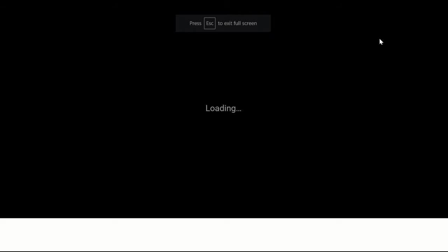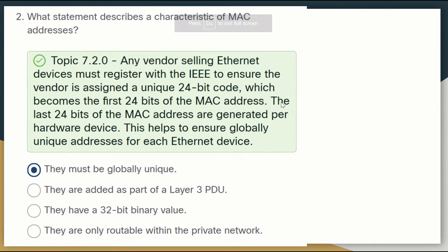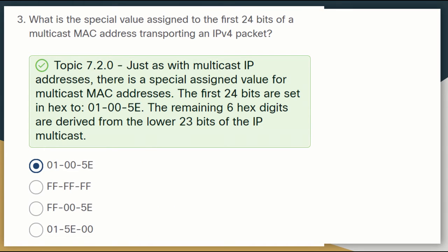The second question asks what statement describes a characteristic of MAC addresses. Any vendor selling an Ethernet device must register with the IEEE to be assigned a unique 24-bit code, which becomes the first 24 bits of the MAC address. The last 24 bits are generated by the hardware device, helping to ensure globally unique addresses. The correct statement is that MAC addresses must be globally unique — every device must have a different MAC address.